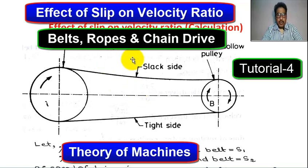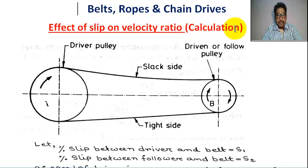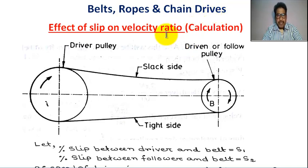Hello student. Welcome to my channel. Today we learn the effect of slip on velocity ratio calculation. Chapter name: Belts, Ropes and Chain Drives, under Theory of Machines.